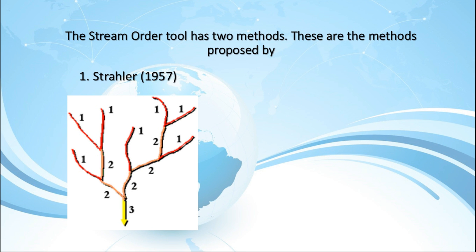The Strahler Method is the most common stream ordering method. However, because this method only increases in order at intersections of the same order, it does not account for all links and can be sensitive to the addition or removal of links.